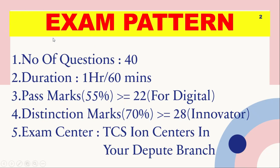The exam pattern for articulation — and all other non-technical tracks — is the same. Number of questions: 40. Duration: 1 hour or 60 minutes. Pass marks: 55%, which is 22 marks. Pass marks for digital candidates require 55% and 22 marks. Distinction marks required for innovator candidates is 70%, equivalent to 28 marks. If you are planning for digital, target distinction because it will also be helpful for innovator roles. Don't assume articulation is very simple — many associates take two or three attempts and still can't clear it. Put in maximum effort.